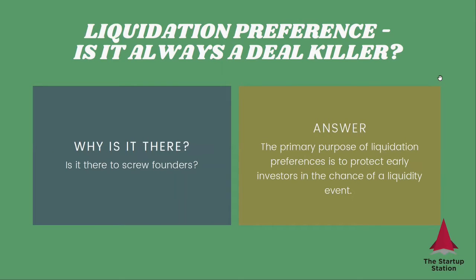Now, why is it there? Is it there to screw the founder? Of course, it's not there to screw the founder. It is there because early stage investors are worried that they're not going to be able to realize a return on their investment, especially as they get diluted by later rounds. And they want to be guaranteed a certain level of investment for all the risk that they're taking.